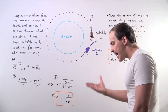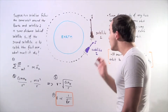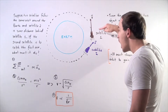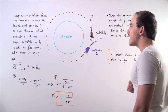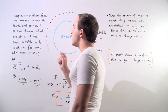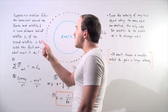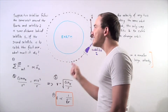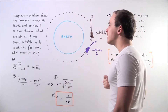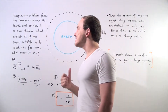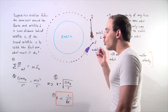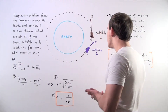We want to ask the following question: how exactly can satellite 2 catch up to satellite 1? Suppose two satellites follow the same orbit around earth and satellite 2 is some unknown distance behind satellite 1. If the second satellite is to catch the first, what exactly must it do?